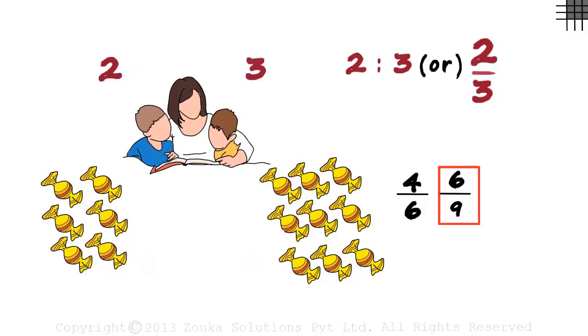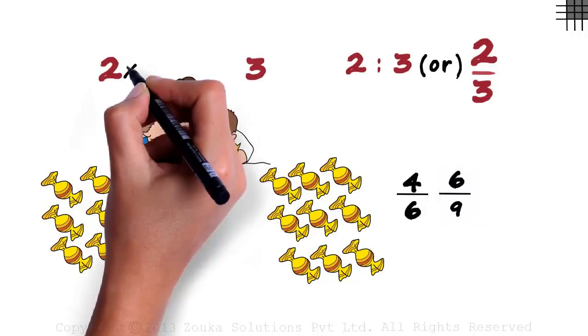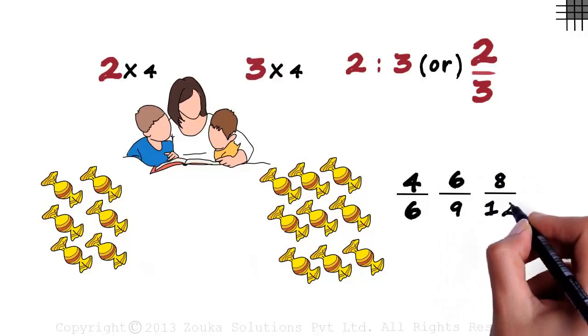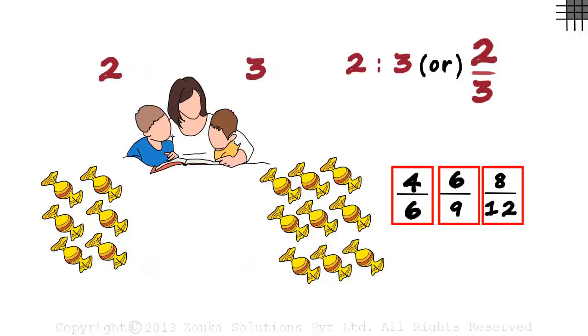And similarly, if you multiply 2 with 4 and 3 with 4, we will get 8 by 12 which is again equivalent to 2 by 3. So all the three ratios are equal to 2 by 3.